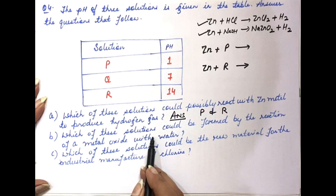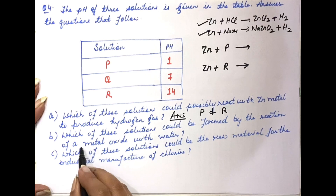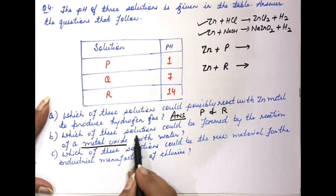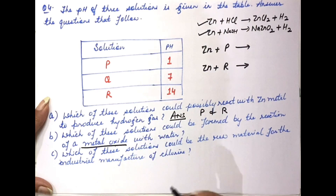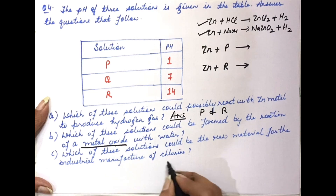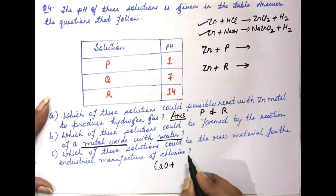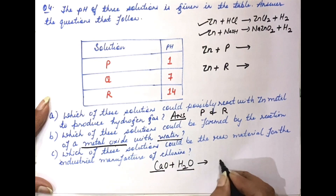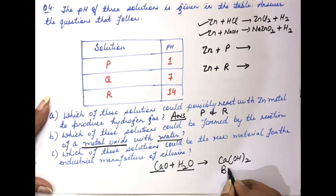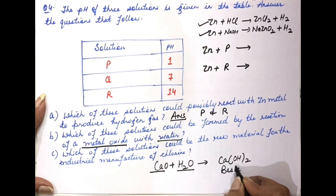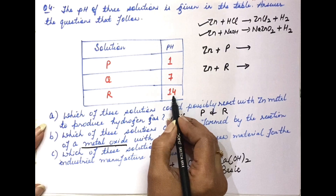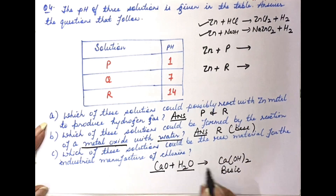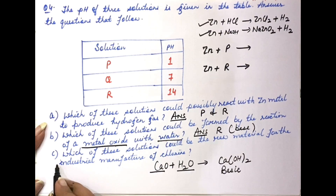Let's verify: zinc reacts with HCl (acid P) forming zinc chloride and hydrogen gas evolution. When zinc reacts with sodium hydroxide (base R), we get sodium zincate salt and evolution of hydrogen. So in both cases — P and R — there is evolution of hydrogen gas. Therefore, both solutions P and R will react with zinc metal.